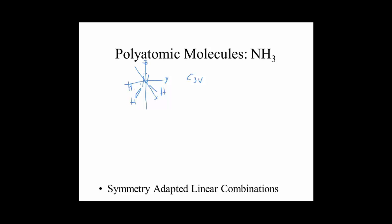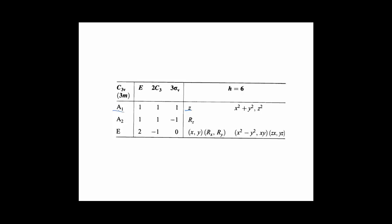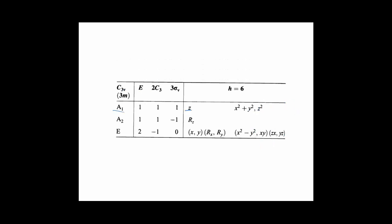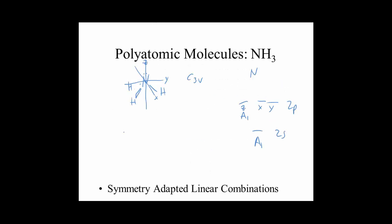So the PZ orbital on nitrogen would have the same symmetry as the Z axis, whereas the PZ orbital on the hydrogens would not, because they're not lined up with the coordinate system. For nitrogen, we can figure out the symmetry of the valence orbitals: the 2s is A1, and PZ also transforms as A1 since Z transforms as A1. And X and Y will probably transform together as the E doubly degenerate symmetry representation.